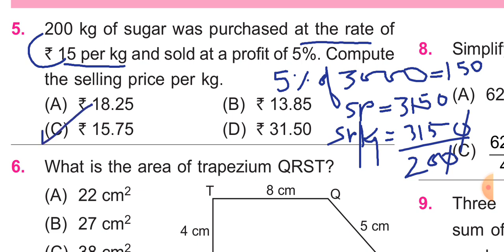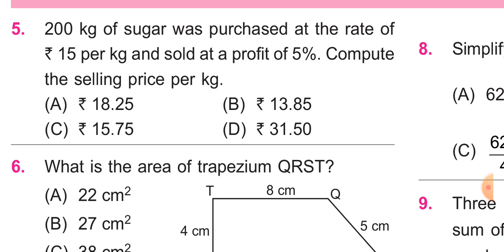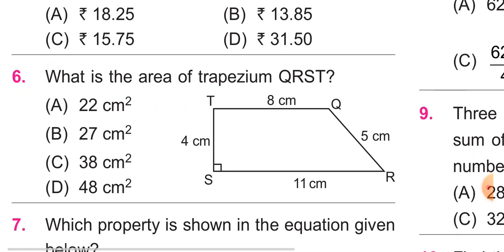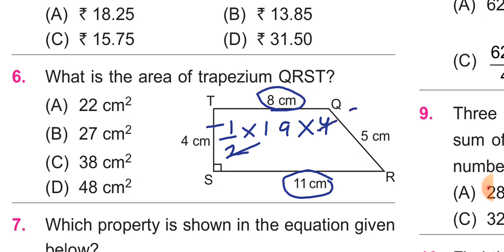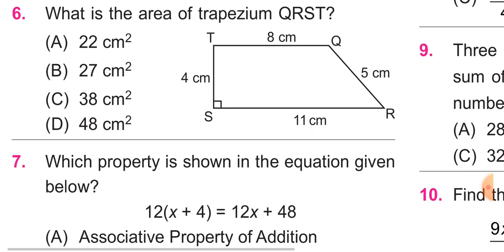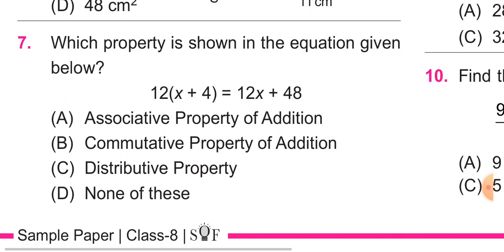Question number 6: area of trapezium is half into sum of parallel sides into height. So half into 8 plus 11, that is 19, times 4, equals 38 cm square. C option is correct. Next, question number 7: which property is shown in the given equation below?